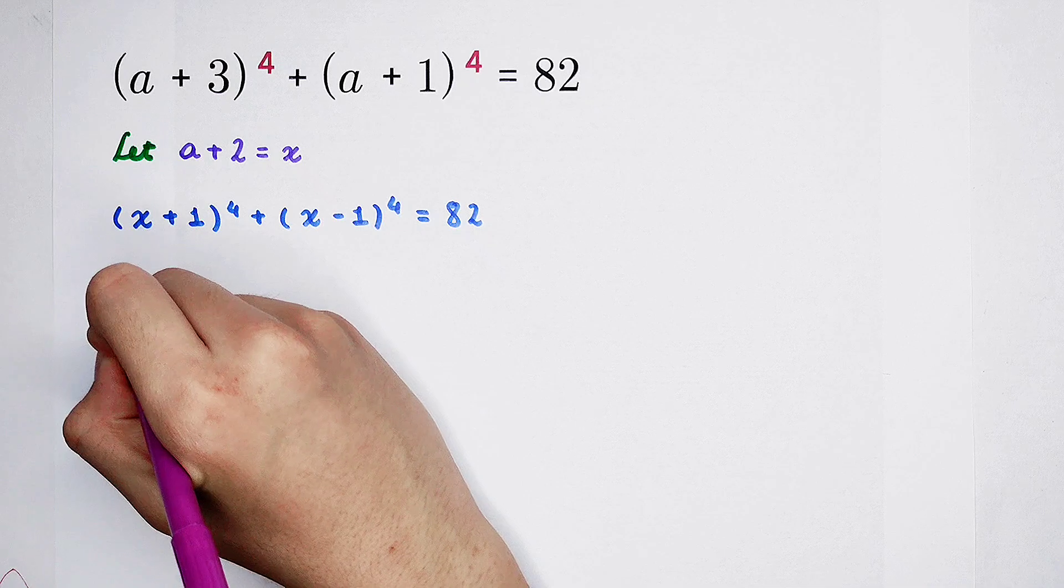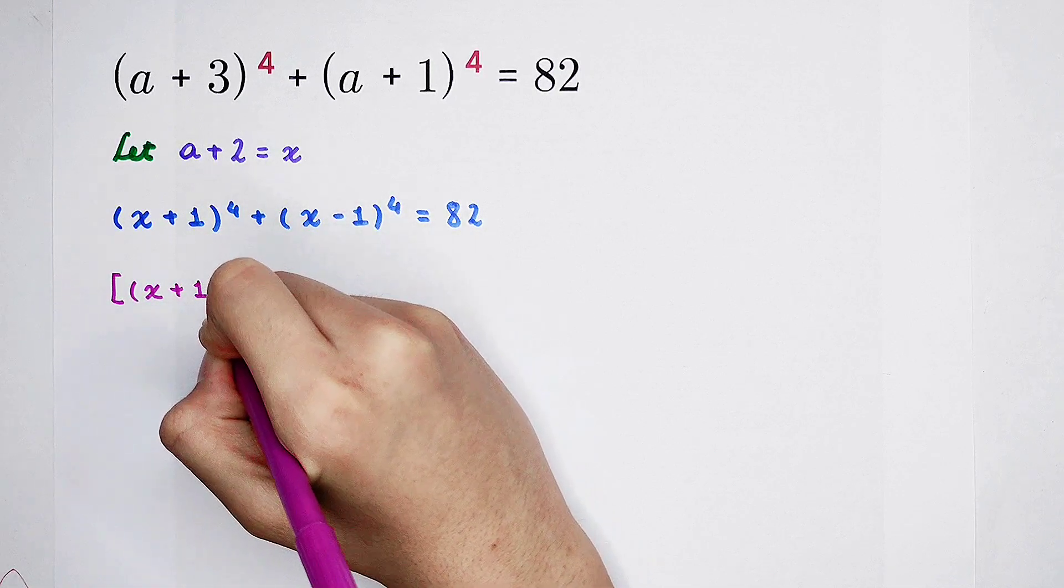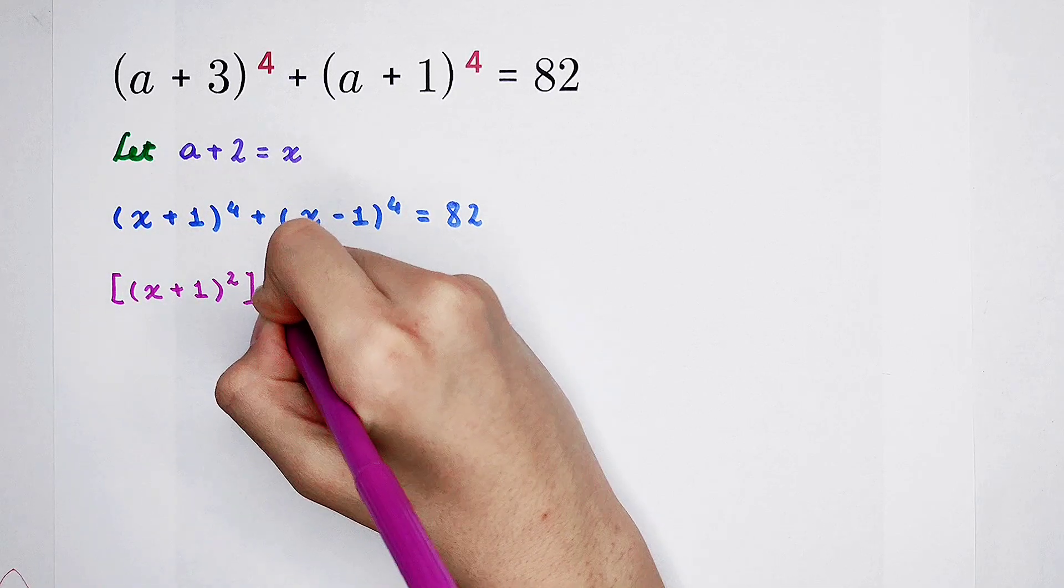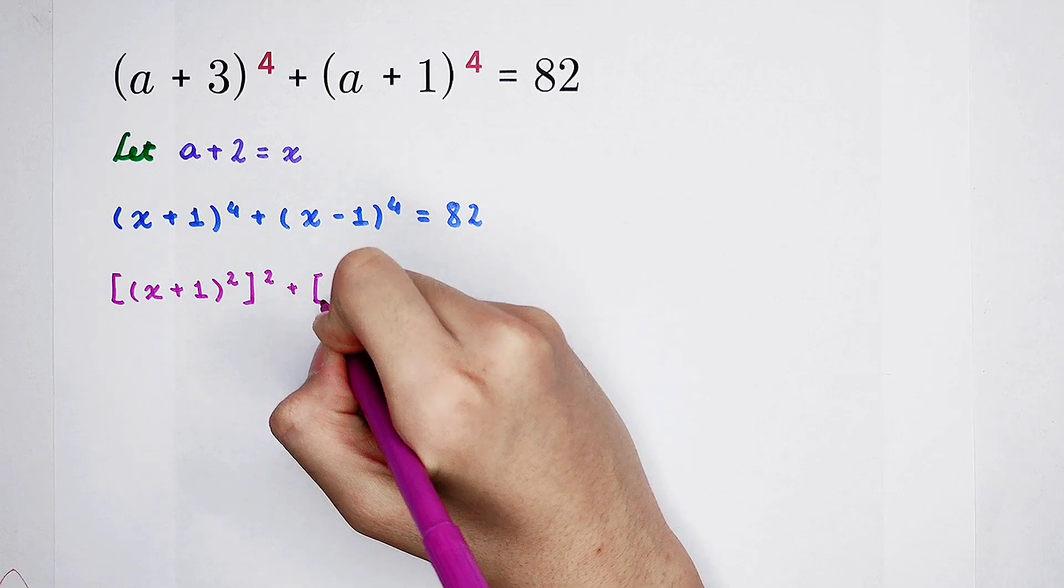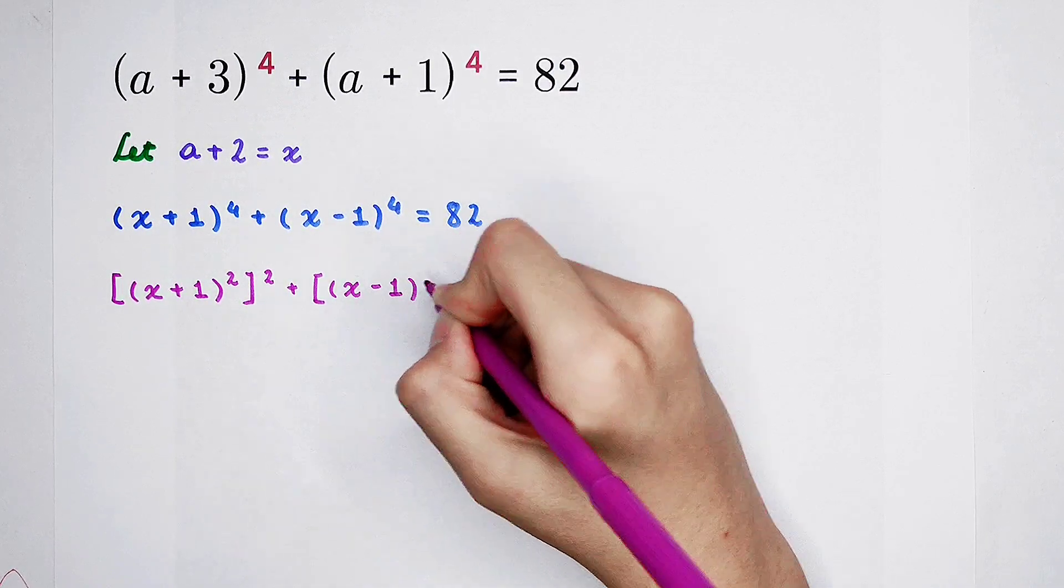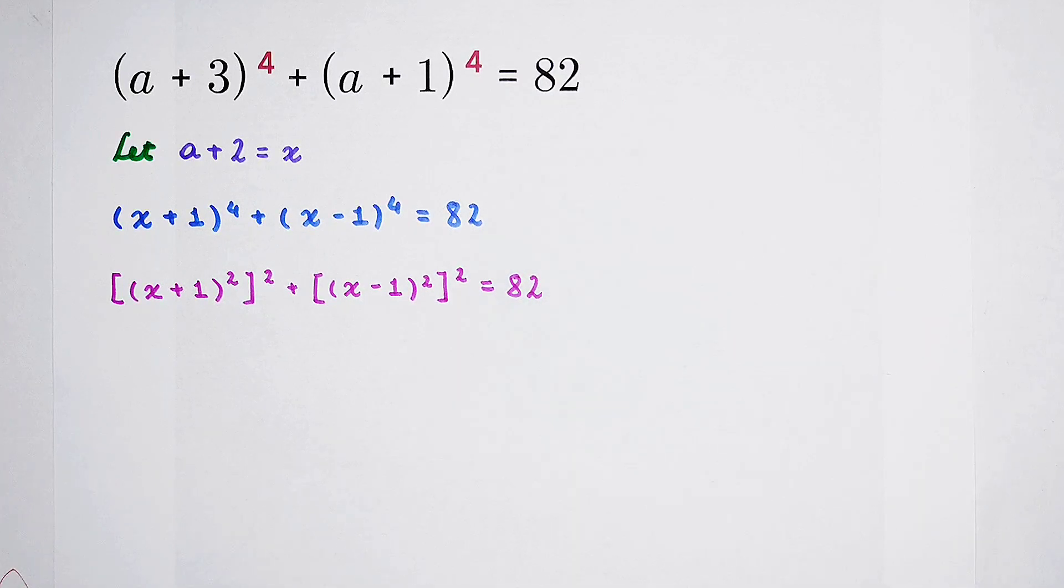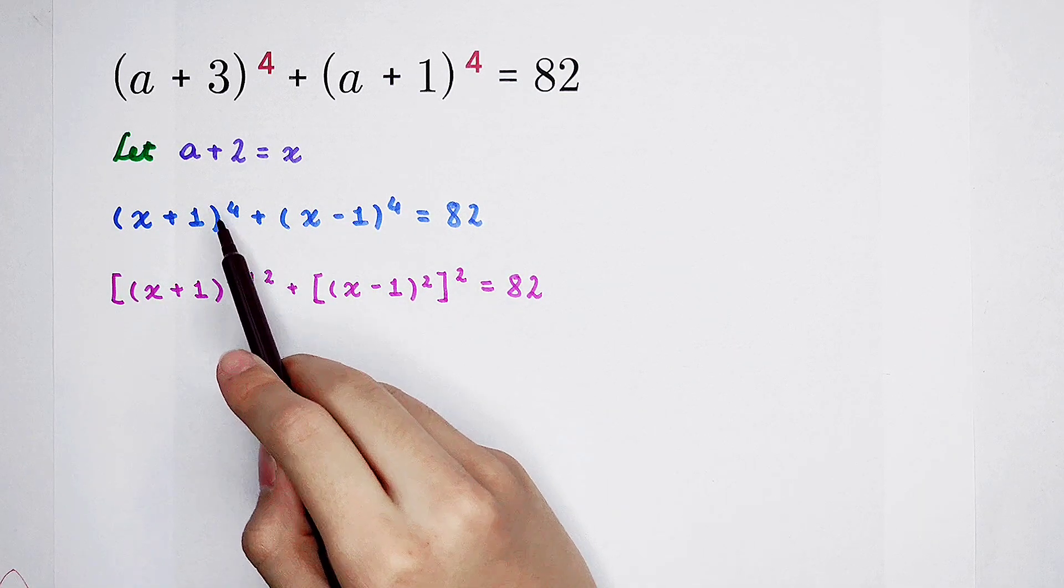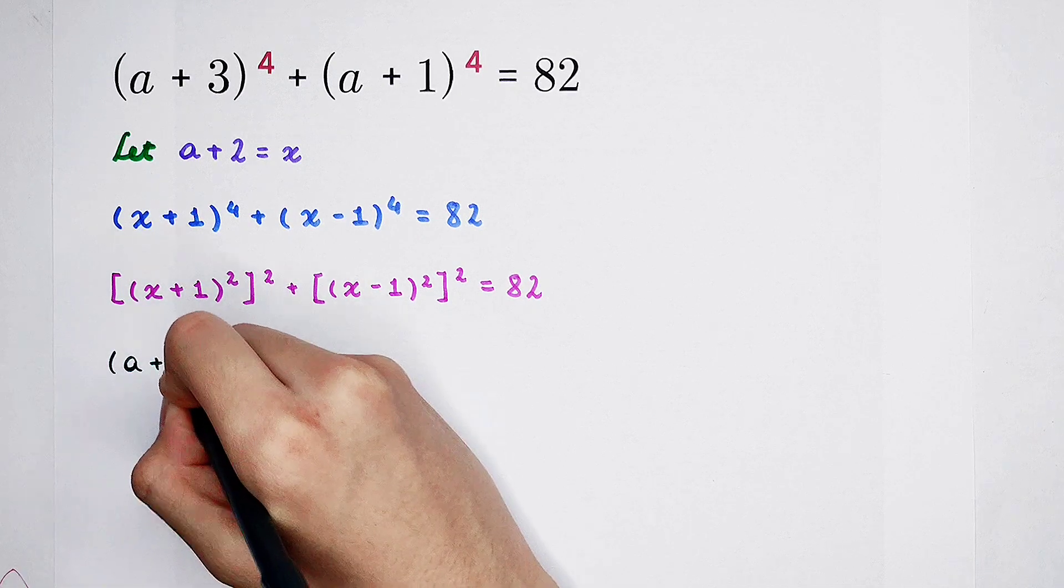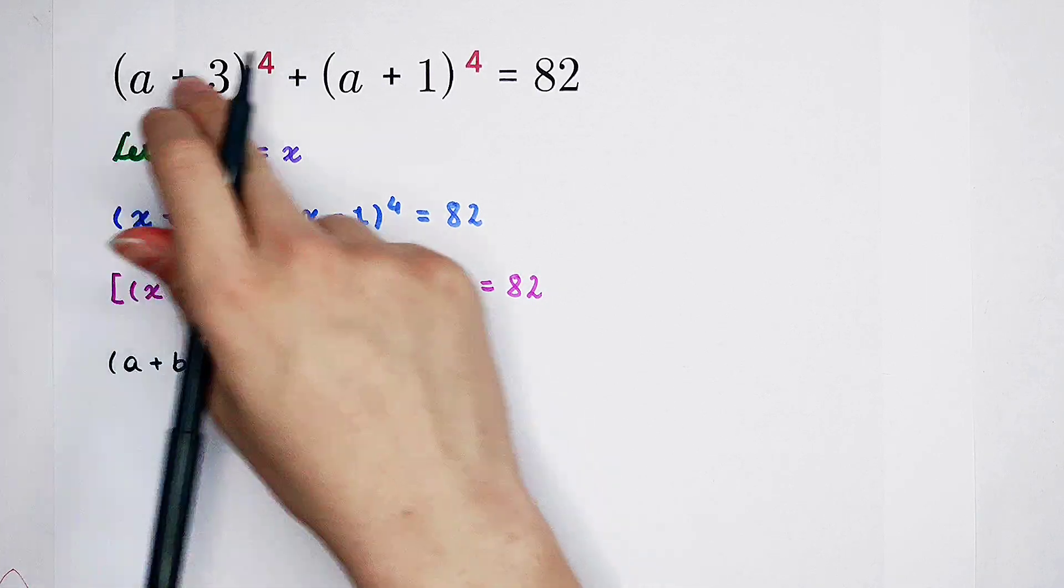And then next, expand. Before expanding, something really little I'm going to do. x plus 1 to the power 4 can be written as x plus 1 to the power 2, and then squared. If you don't know the formula with exponent 4, then just use 2 and then 2. This formula, A plus B squared, you should know. But don't confuse this A with this A. This is just the formula, and this is our problem.